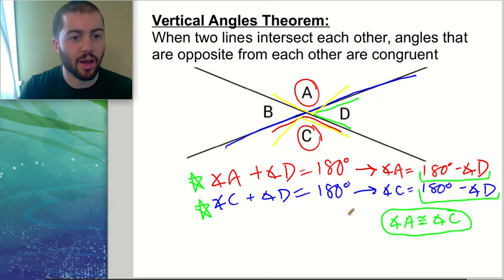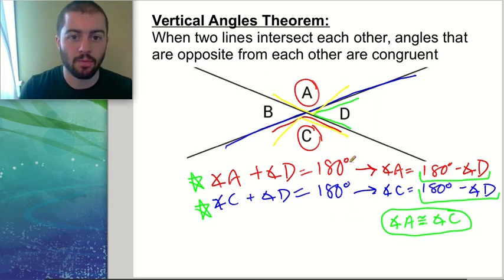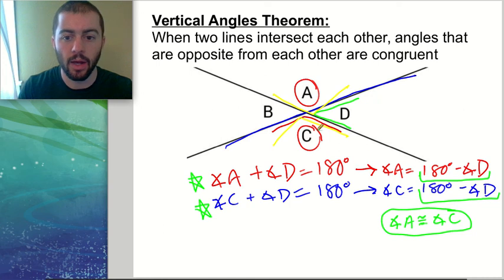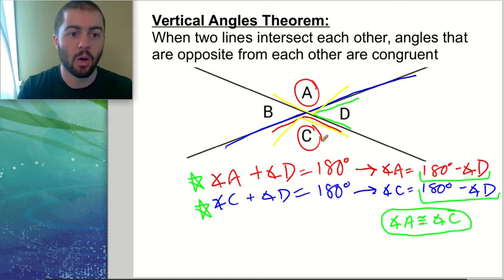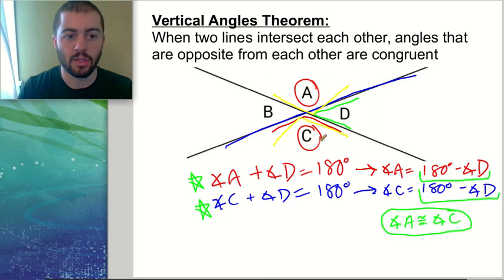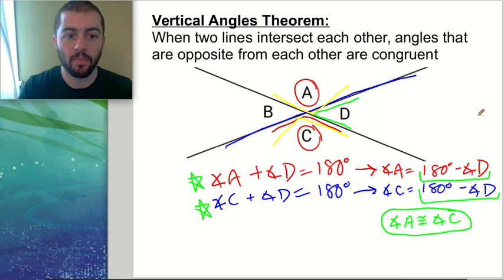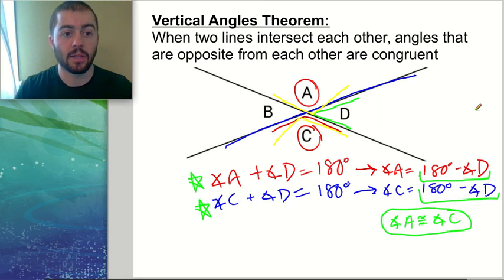So this is a brief informal proof of the vertical angles theorem, based on two major concepts: a straight line being 180 degrees, and the transitive property. It's a theorem you're going to need to know when we go to do parallel line proofs, parallelogram proofs, triangle proofs, and more. Thanks for watching this video and I'll see you in the next one.